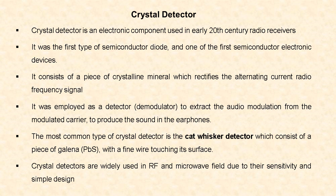Crystal detector was the first type of semiconductor diode and it was one of the first semiconductor electronic devices. This crystal detector consists of a piece of crystalline mineral which rectifies the alternating current radio frequency signal given to it.